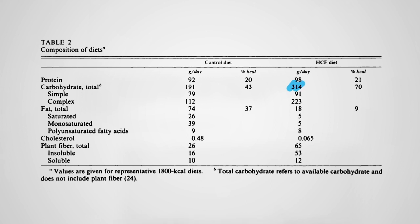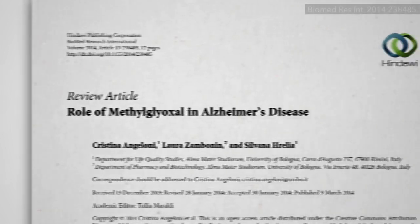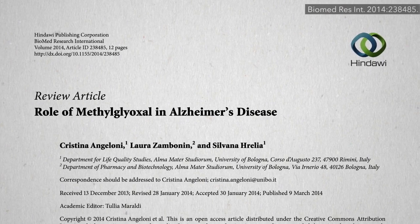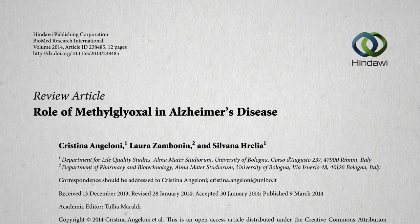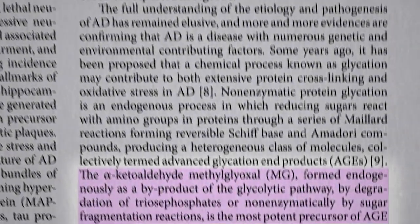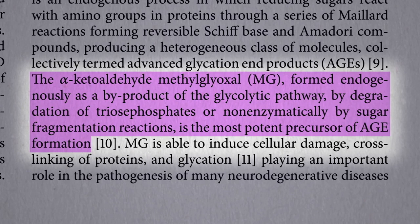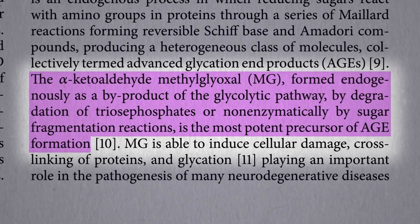The irony doesn't stop there. One of the reasons diabetics suffer such nerve and artery damage is due to an inflammatory metabolic toxin known as methylglyoxal that forms at high blood sugar levels. Methylglyoxal is the most potent creator of advanced glycation end products, the so-called AGEs.